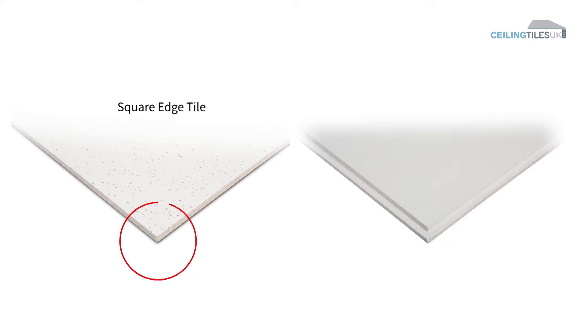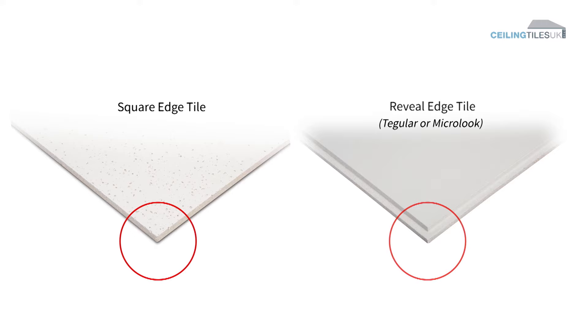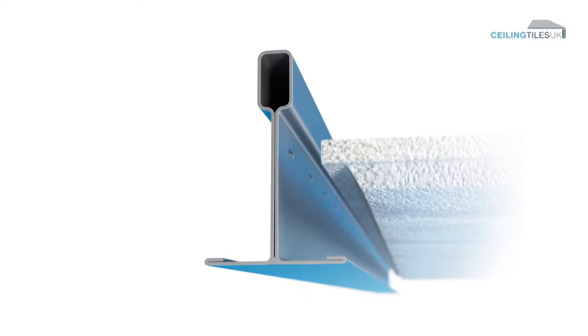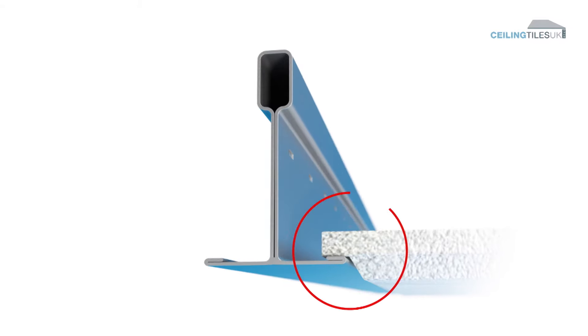Step 2: Edge detail. After you have selected the tile size, you will have the chance to choose between a square edge tile or a reveal edge tile, often called tegula or microlook, as shown here in the video. The most common square edge tile has a 90-degree squared edge and sits flat in the ceiling, whereas the reveal edge allows the tiles to sit just below the level of the grid as a design feature.